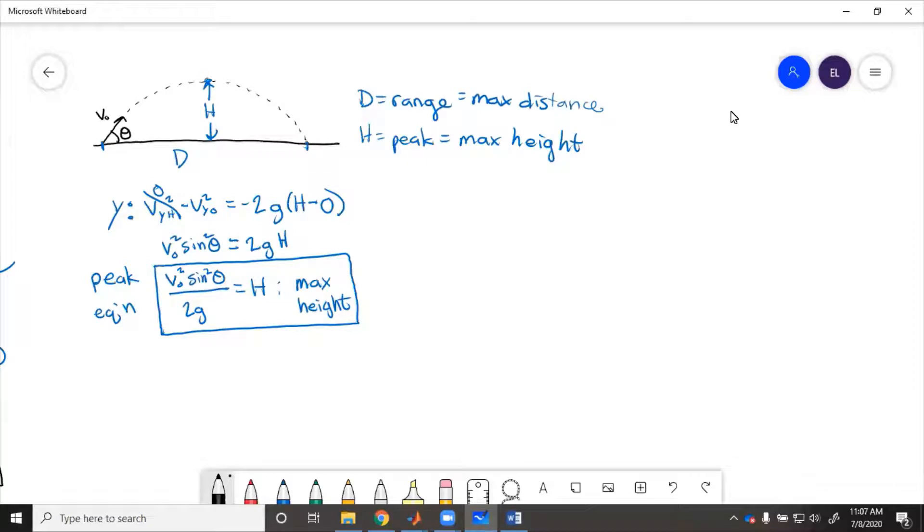Now if we want to find the maximum distance that it goes, it starts here, ends here, we want to know how far does it go. So for that, we'll need to use the x equation. So in x direction, we have D. So x at the end is going to equal V initial cosine theta times time, say this is time to D.